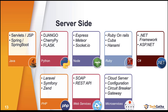For Python, be aware of Django, CherryPy, and Flask. For Node.js, there's the Express framework, Meteor, and Socket.io. For Ruby, know Ruby on Rails, Cuba, or Hanami. For C#, it's .NET and ASP.NET. For PHP, there's Laravel, Symfony, or Zend. Web services are of two types: SOAP-based and REST-based APIs. REST is more widely used due to ease of creating and consuming, and it is also mobile-friendly.